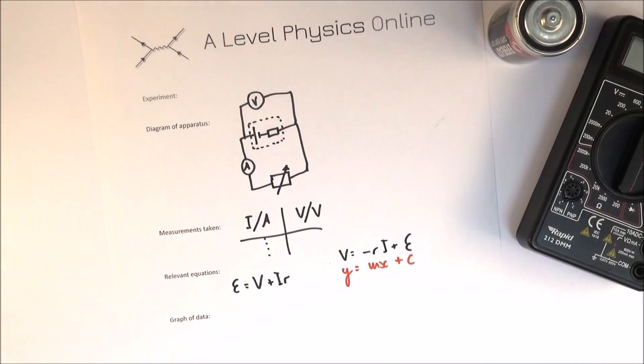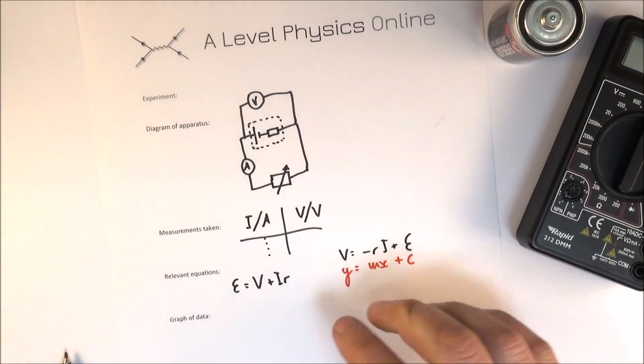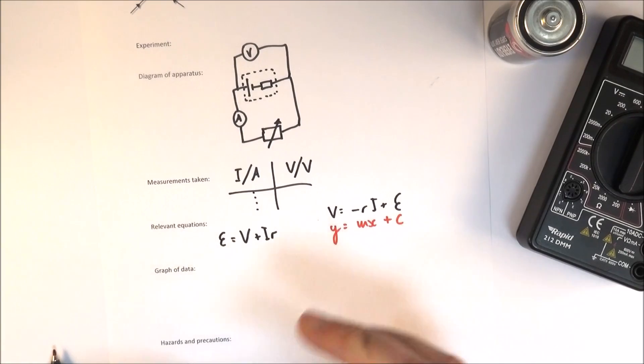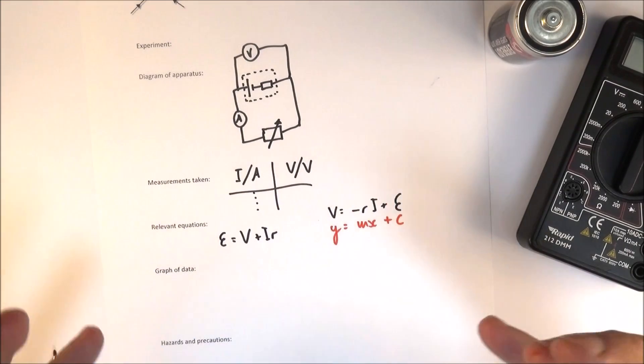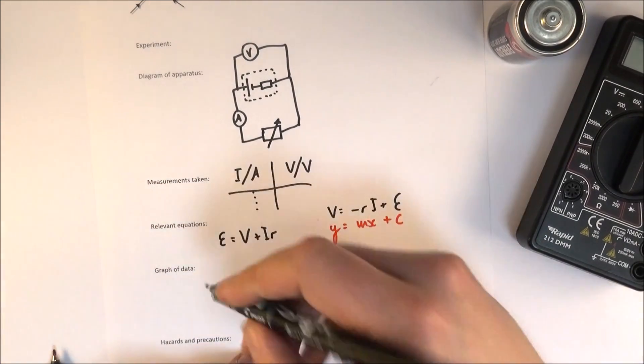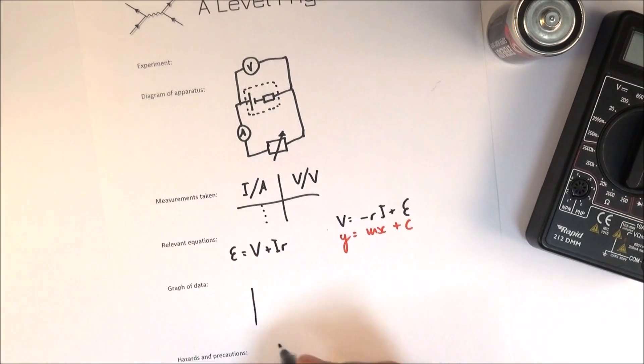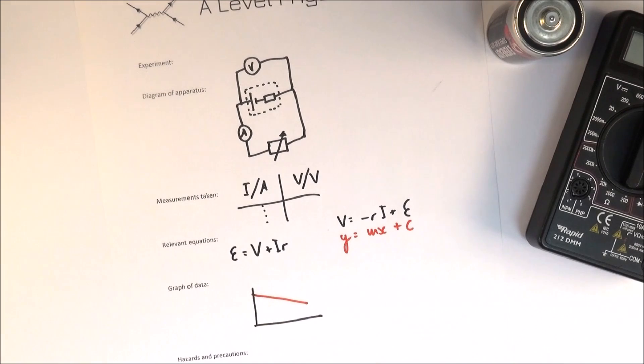Now for most experiments that you're going to be doing there's often a graph of data. This allows you to spot anomalies and it allows you to calculate a gradient and maybe a Y intercept which maybe have some meaning. In this case here I've just got a sketch of what you get. So you get a graph that looks a bit like this.